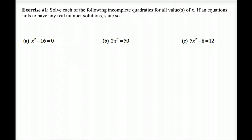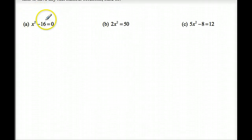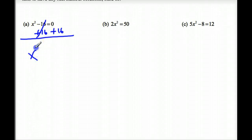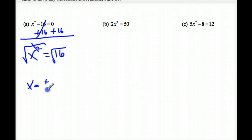Example 1: Solve each of the following incomplete quadratics for all values of X. If an equation fails to have any real number solution, state so. The first one is incomplete — there is no B term. I want to get rid of my C term, so I add 16 on both sides. I'm left with X squared equals 16. To get X, I take the square root of both sides. The square root of 16 is plus or minus 4, and those are my two answers.